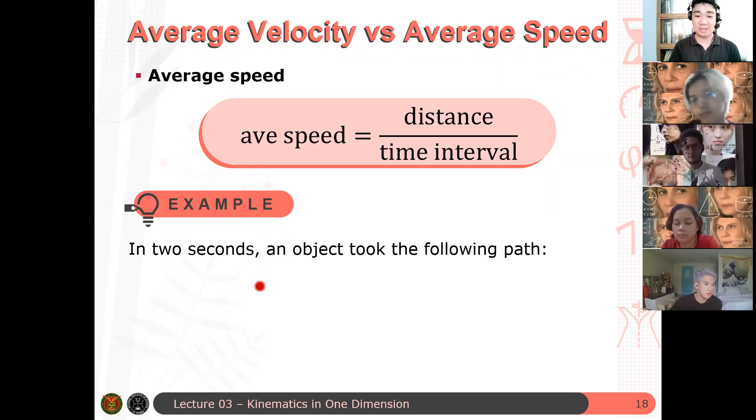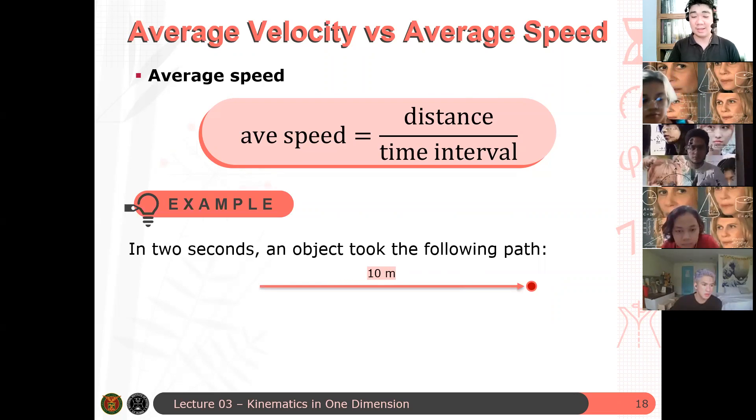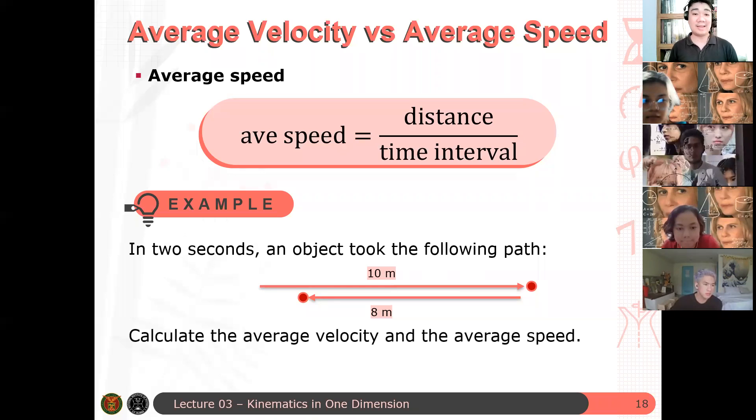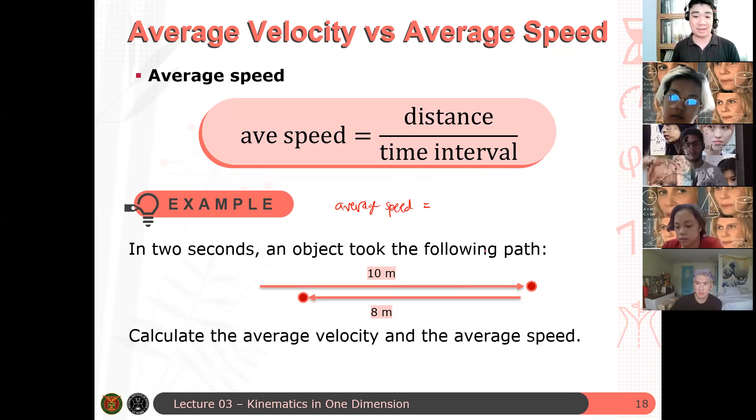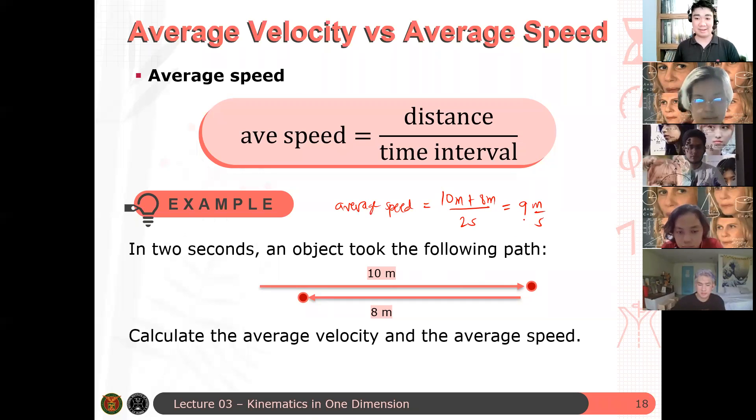Let's say you have a particle initially at this position. Then it moved 10 meters to the east. And then it moved 8 meters to the west. So calculate the average velocity and the average speed. So since this is an example, I need to solve this. So what is the average speed? The average speed is just what? Again, since we are talking of distances here, we do not consider the direction the particle has traveled or the object has traveled. So in that case, we just add them as is. So we have 10 meters plus 8 meters all over 2 seconds, which gives you what? 9 meters per second.